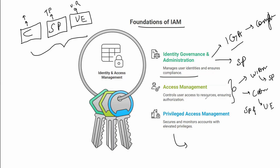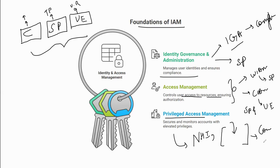On the access management side, it controls user access to resources, ensuring authentication and authorization. Privilege Access Management secures and monitors accounts with elevated privileges — for example, managing non-human identities, server accounts, and service accounts by vaulting them and monitoring all actions. This covers compliance and improving security posture. In summary: IGA is primarily for compliance and security posture; Access Management for security posture and user experience; PAM for compliance and heavily for security posture.